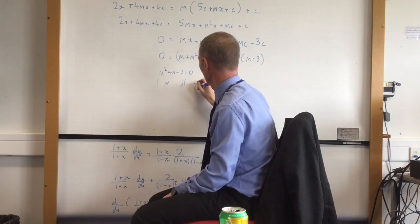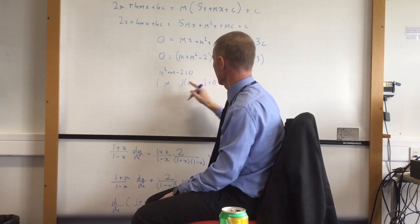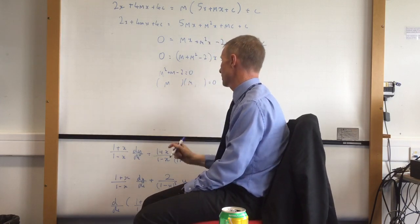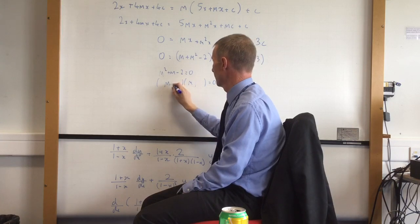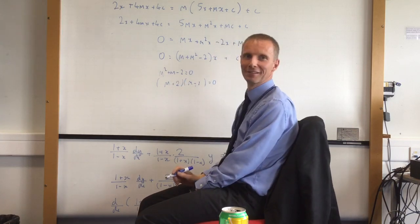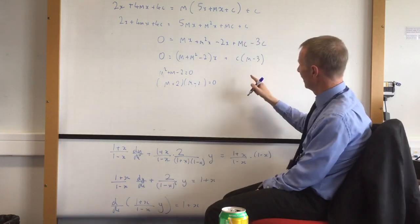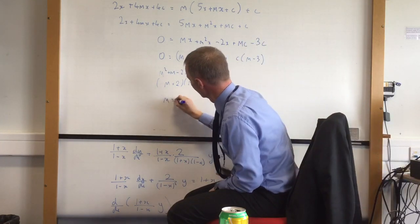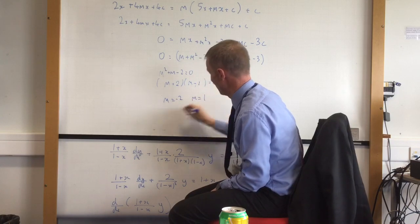So that tells me that, what's that going to be? This is the tricky bit. Plus 2 minus 1. Yeah? Which tells me that m is minus 2 and m is 1.